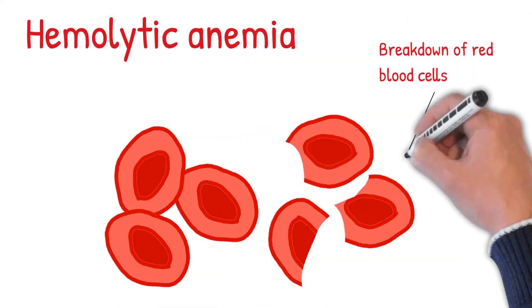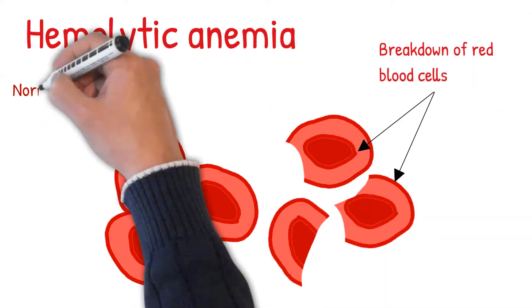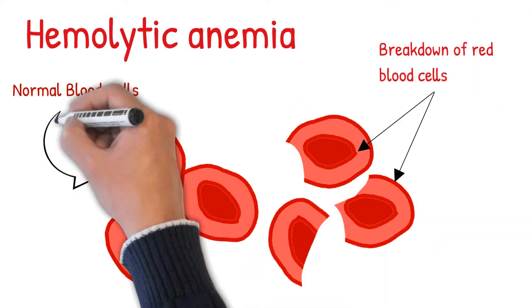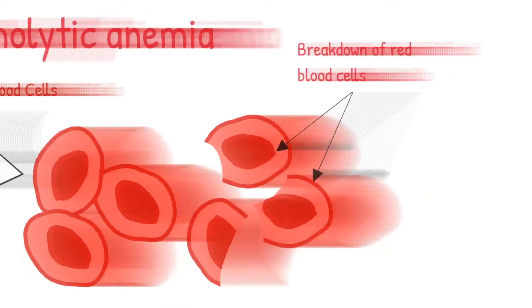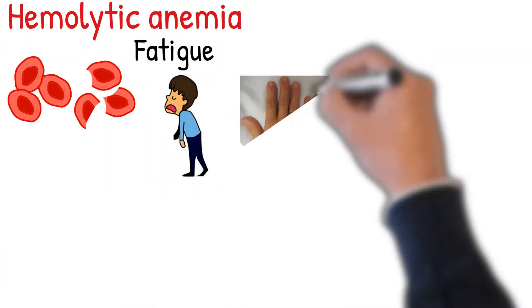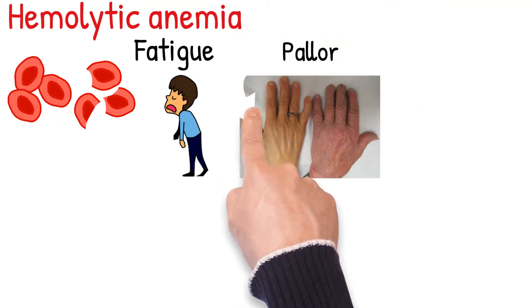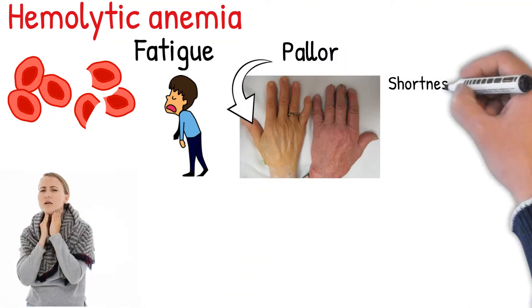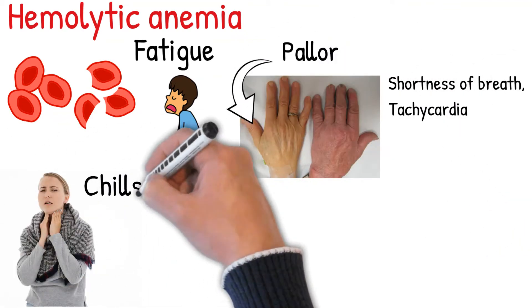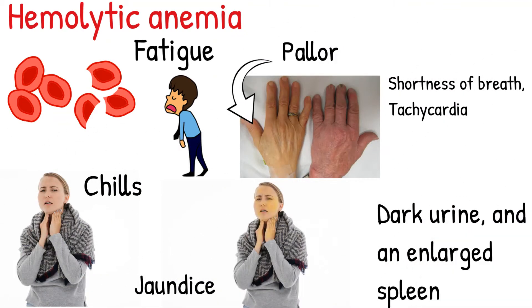Hemolytic anemia is a decreased number of red blood cells due to abnormal breakdown of red blood cells. General signs and symptoms include fatigue, pallor, shortness of breath, tachycardia, chills, jaundice, dark urine, and an enlarged spleen.